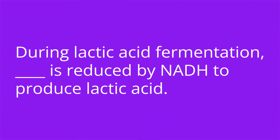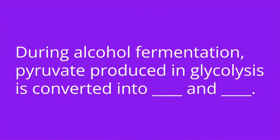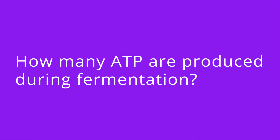It's quiz time, and I have three questions for you. Question one: during lactic acid fermentation, blank is reduced by NADH to produce lactic acid. The answer is pyruvate. Question two: during alcohol fermentation, pyruvate produced in glycolysis is converted into blank and blank. The answer is acetaldehyde and carbon dioxide. Question three: how many ATP are produced during fermentation? The answer is two.